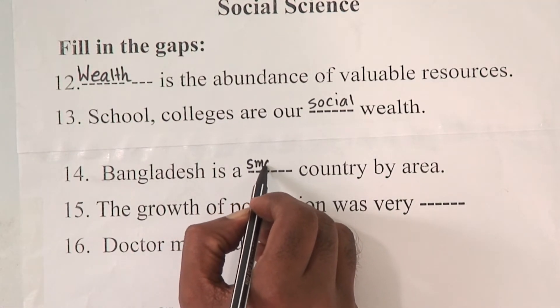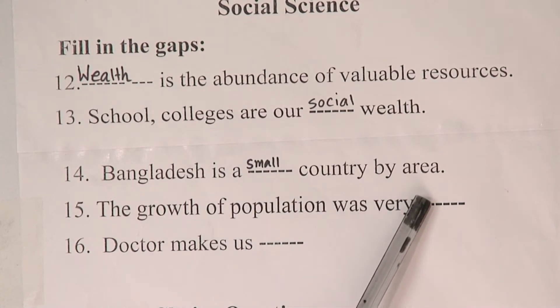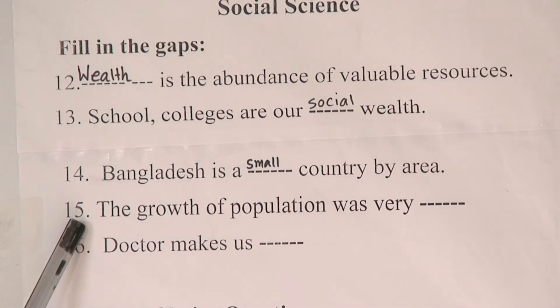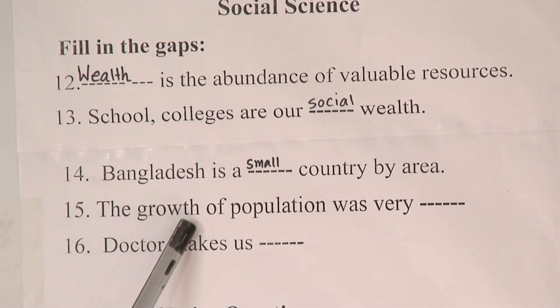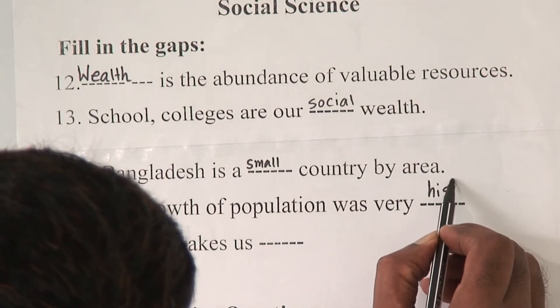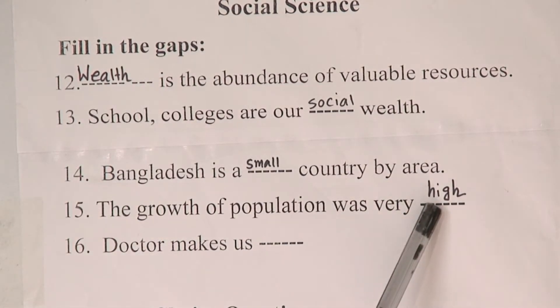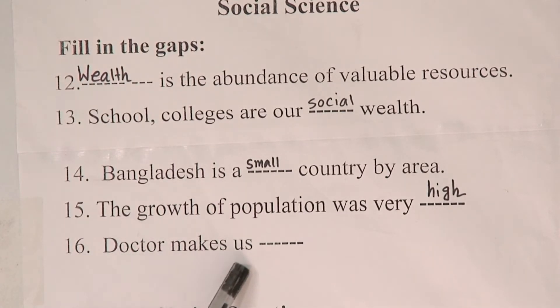Number 14: 'Bangladesh is a dash country by area.' The answer is small — S-M-A-double L. Bangladesh is a small country by area, but we have a large population. Number 15: 'The growth of population was very dash.' The answer is high — H-I-G-H.